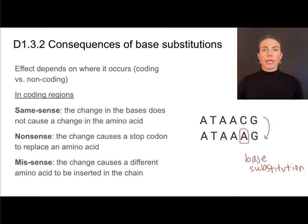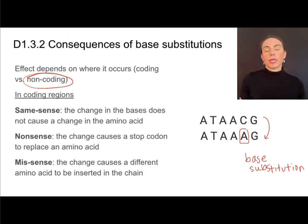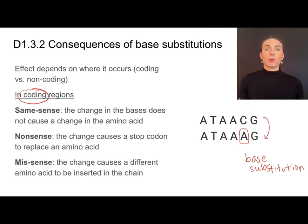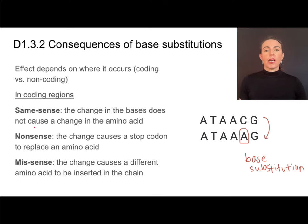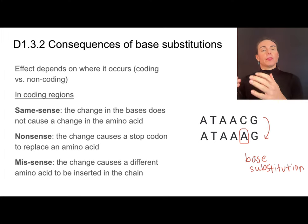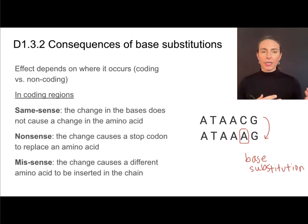The consequence of these mutations can largely depend on where they are — whether they're in a coding region that makes a protein or a non-coding region. We'll focus specifically on base substitution mutations occurring in coding regions. We want to be on the lookout for how they might change the amino acid sequence of the polypeptide. We can have a same-sense mutation where a mutation still occurs, but there's not a change in the amino acid sequence. The codons of mRNA will be different, but those codons still code for the same amino acid. That refers back to the degenerate genetic code. Some texts or teachers may refer to this as a silent mutation because it does not change the amino acid sequence.